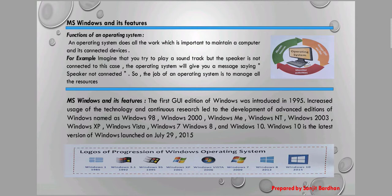MS Windows and its features: the first GUI edition of Windows was introduced in 1985. Increased use of technology and continuous research led to the development of advanced editions of Windows, named 98, 2000, Windows ME, Windows NT, Windows 2003, XP, Vista, 7, 8, and 10. These are all the advanced editions of Windows.